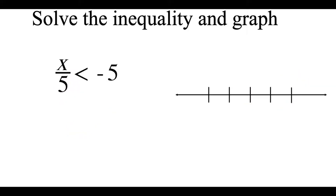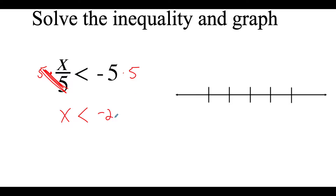In the next example we've got x over 5 is less than negative 5. The fraction bar means we're dividing, so x over 5 really means x divided by 5. To get rid of dividing by 5 the opposite is multiplying, so we're going to multiply both sides by 5. Those 5s cancel out leaving x is less than, and negative 5 times 5 gives us negative 25.